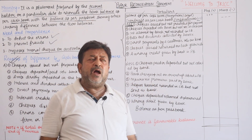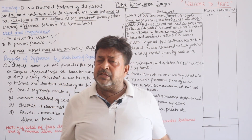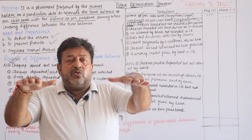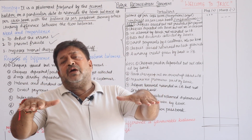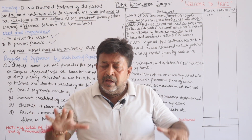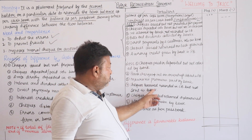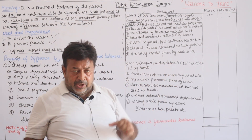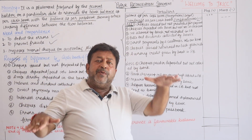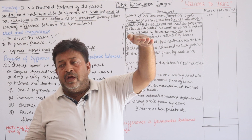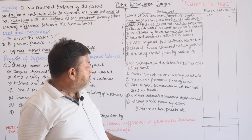Bank charges for services: the bank has deducted charges such as insurance premium payments or service fees from our account. I gave responsibility to the bank and they reduced my balance, but I haven't recorded it in the cash book. So I must deduct it. Also, checks received and recorded in cash book: I recorded a received check in the cash book, increasing the cash book balance, but it has not yet been deposited or collected by the bank.